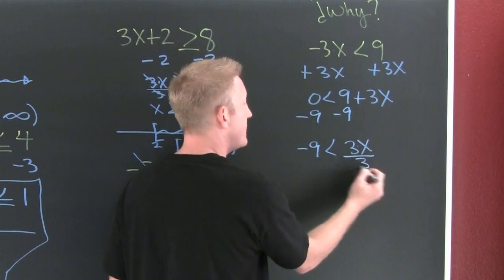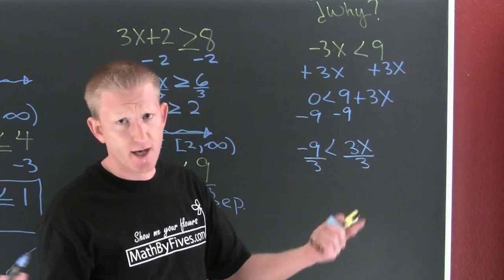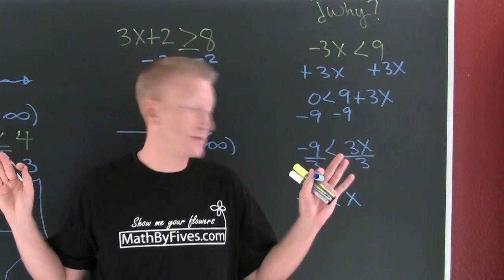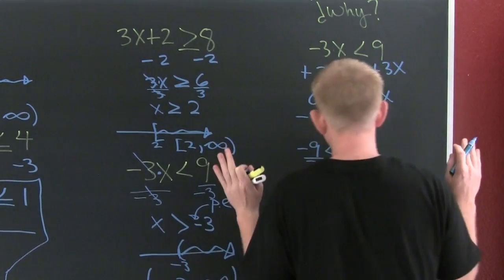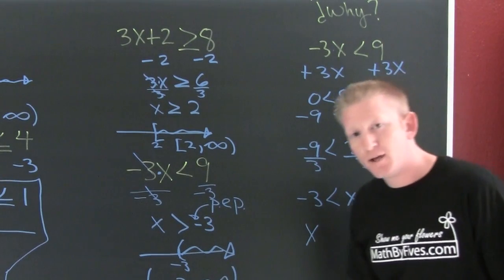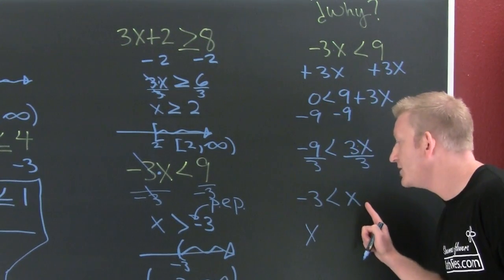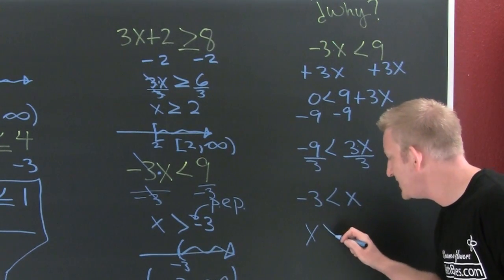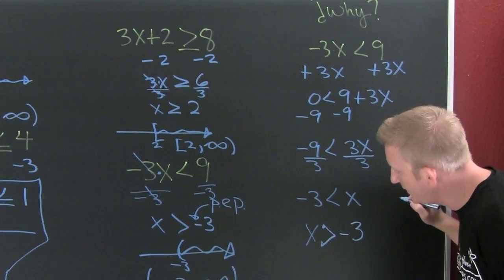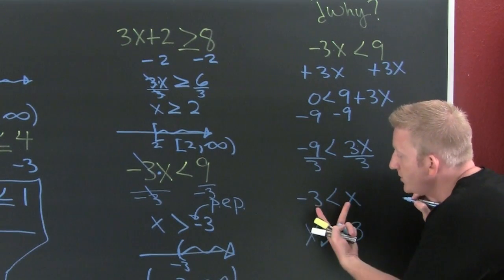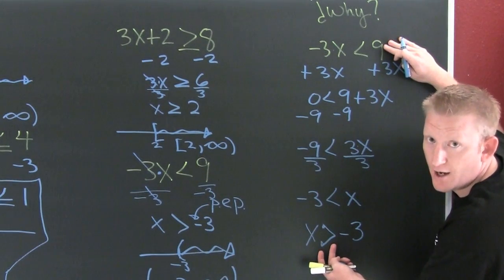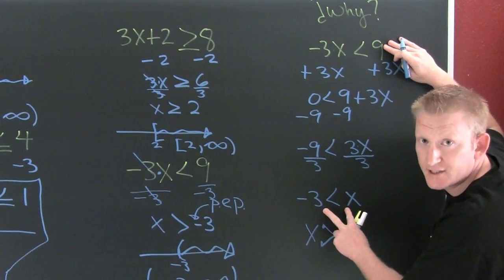Divide both sides by positive three — no need to flip the sign there, because it's not negative. You get negative three is smaller than x. Now write the equivalent expression with x on the left by flipping everything: x is greater than negative three. The alligator still opens toward x because x is bigger. This shows why whenever you multiply or divide by a negative number, you have to flip the sign.